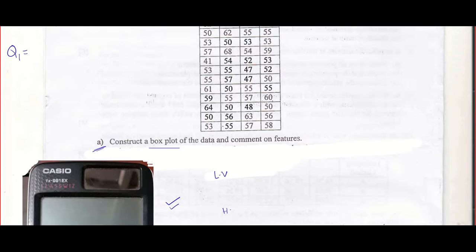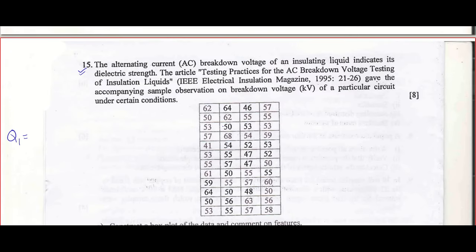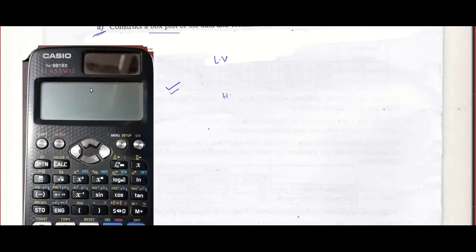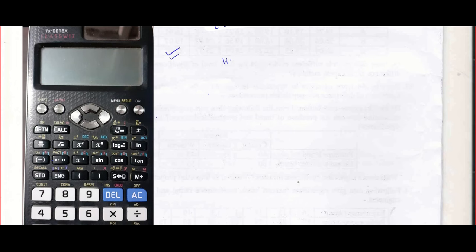When you are given a lot of data, as in question number 15, you can find quartiles using the calculator. You press on and then take the menu and then 6. You will see the bar diagram symbol — that icon with bar diagram will come. That is the statistics mode. And 7 will be normal distribution mode.